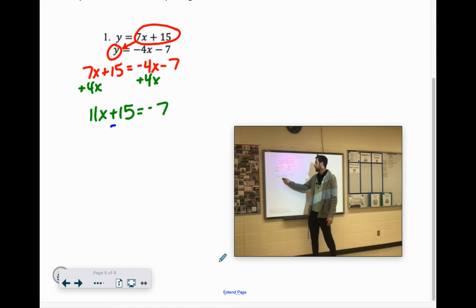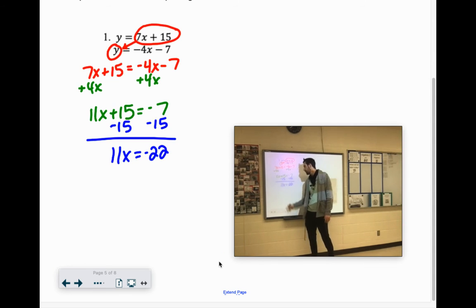Get rid of the plus 15 by subtracting 15, which gives us 11x equals negative 22. And we just have to divide by 11, which gives us x equals negative 2.